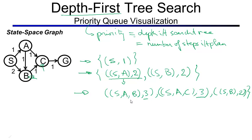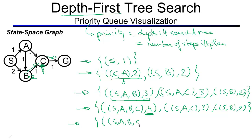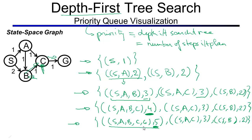Looking for the next expansion, the nodes with the highest priority are the 3's. Alphabetical tie-breaking picks S, A, B first. B has only one successor C, so we get S, A, B, C with a priority of 4. The other two elements S, A, C with priority 3 and S, B with priority 2 remain. Next to expand is S, A, B, C with priority 4. C has only one successor G, so we get S, A, B, C, G with a priority of 5. The next to expand is this one with priority 5, and we realize the last state is G — the goal state — so we declare success. The path found is S, A, B, C, G.